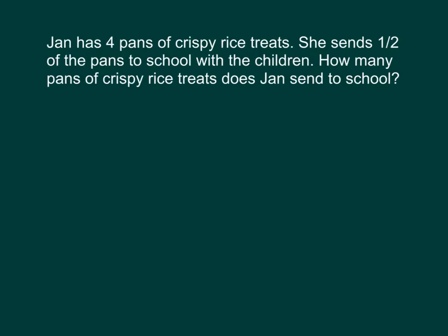Jan has four pans of crispy rice treats. She sends one half of the pans to school with the children. How many pans of crispy rice treats does Jan send to school? She sends one half of them. She had four pans, so one half of four equals two. She sends two pans. Here's the multiplication sentence that shows that work.